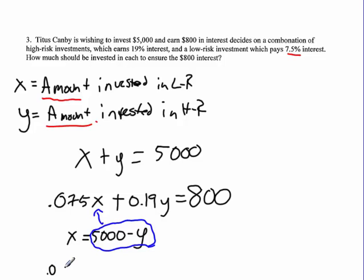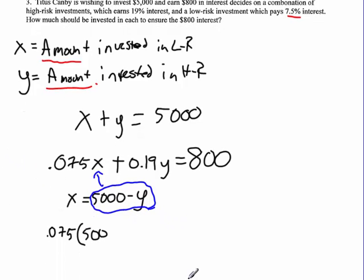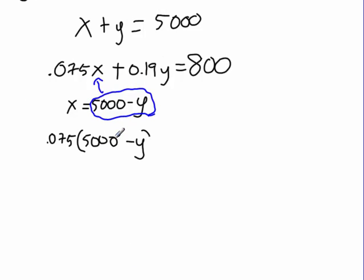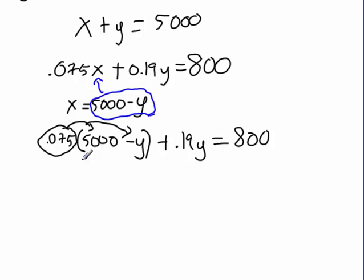So, I have 0.075 times 5,000. I bet that's off the screen, isn't it? 0.075 times 5,000 minus Y plus 0.19Y. That all equals 800. Now, I take my 0.075 and I distribute. There and there. 5,000 times 0.075. Everybody knows. 375 minus 0.075Y plus 0.19Y equals 800.